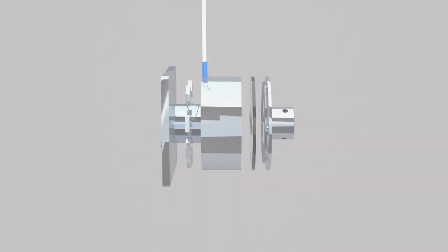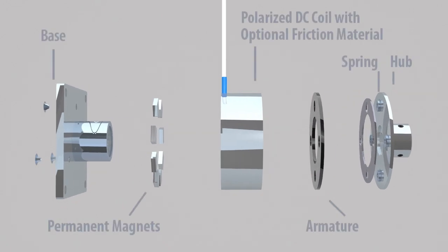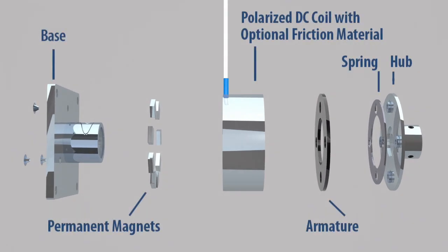The key components to the brake are the permanent magnets, polarized DC coil with optional friction material, armature, spring, and hub.